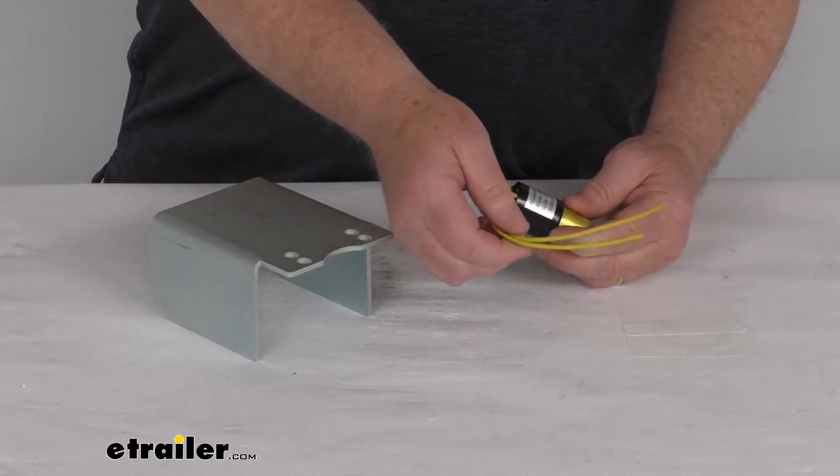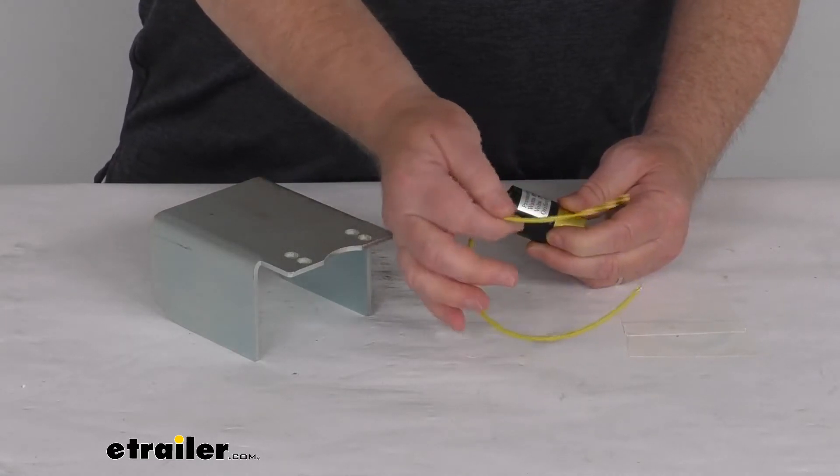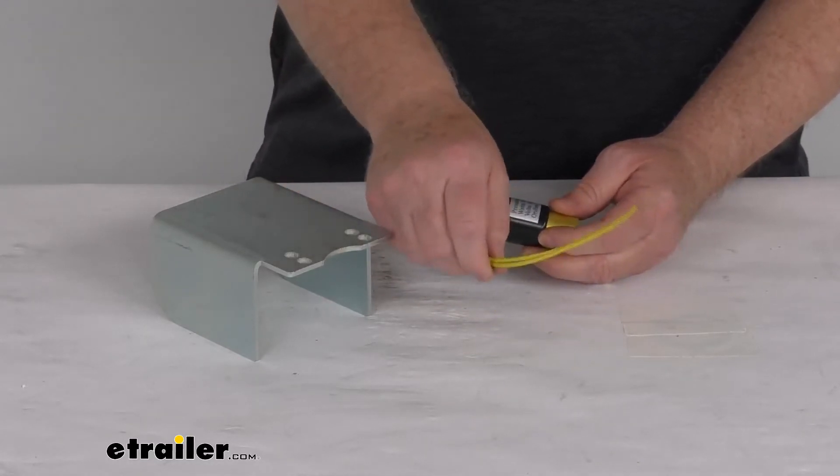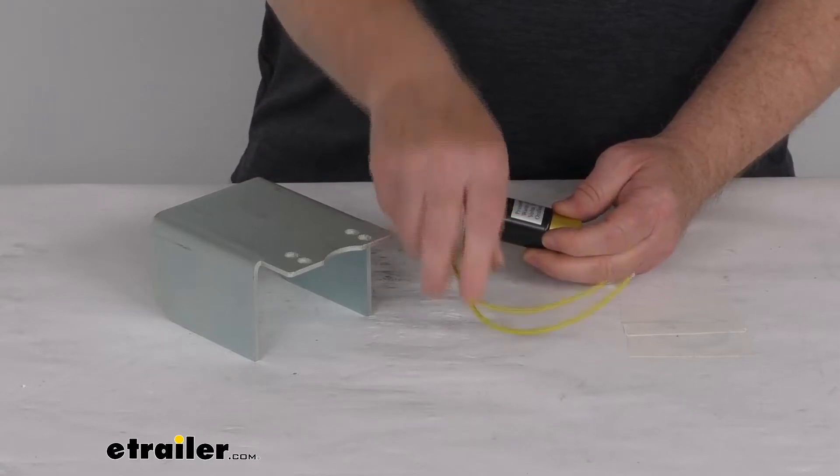If you notice there are two yellow wires. These need to be connected one to a ground, the other to the reverse light circuit, and they're both yellow wires so it doesn't matter, you can use either wire for either function.